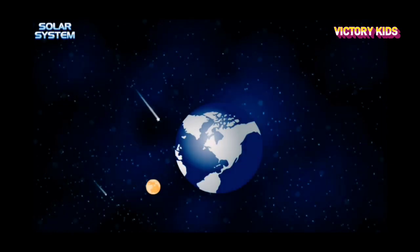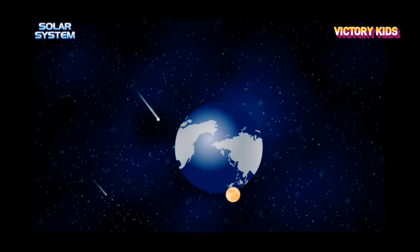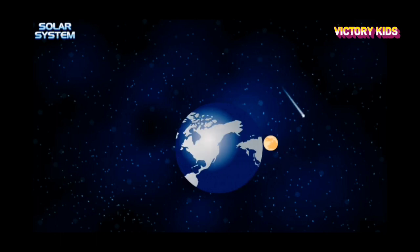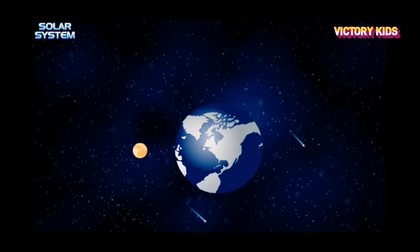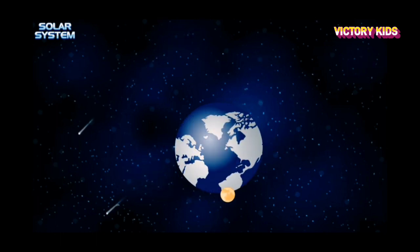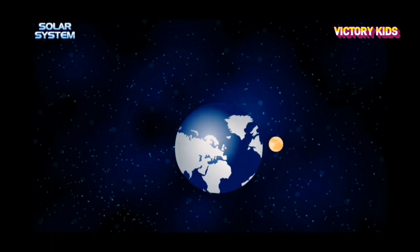Earth has one moon. There are many planets that have more than one moon. The moon revolves around the Earth as well as the sun. It takes the moon approximately 28 days to revolve around the Earth.